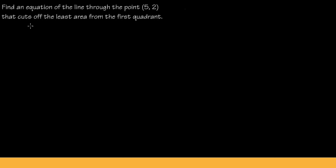In this video, I'm going to show you how to find an equation of a line that goes through the point (5, 2), and the line has to cut off the least amount of area from the first quadrant. This is the usual Calc 1 minimum/maximum problem. Be sure you pause the video right now and try to solve this question first before you watch the solution.